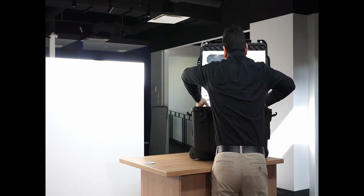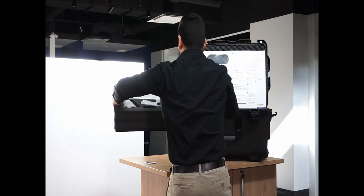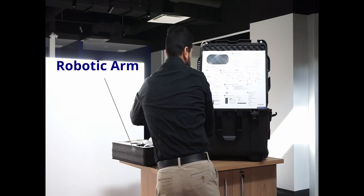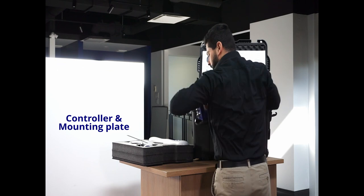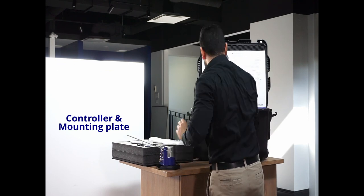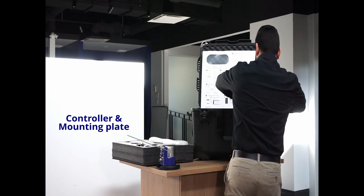In the first stage of the box, you will find your robotic arm. Then, in the second level, you will find the controller already mounted on the mounting plate and the table clamp.